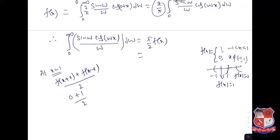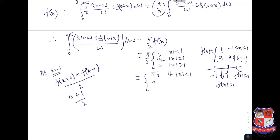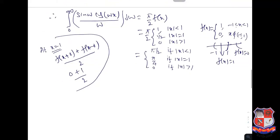So at x = 1 we take the average: (0 + 1)/2 = 1/2. Therefore our result is: ∫₀^∞ (sin ω · cos ωx)/ω dω equals π/2 when |x| < 1, π/4 when |x| = 1, and 0 when |x| > 1. At the point of discontinuity we take the left value plus the right value divided by 2.